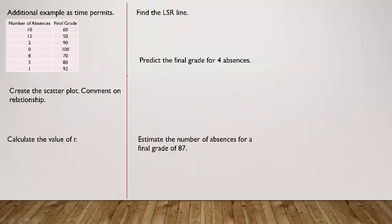Let's do another problem. We have number of absences and final grade. The explanatory variable is number of absences and the response variable is final grade, because absences explain your grade to some degree — someone with 10 absences likely has a lower grade than someone with zero absences.